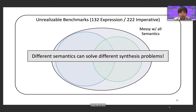The important takeaway is that different semantics can solve different sets of synthesis problems, which confirms our idea that experimenting with different ideas and optimizations expressed as different semantics supplied to a SemGUS problem indeed has merit. You may be intrigued that Messi seems to have far better performance for proving unrealizability versus synthesizing programs. To provide a rough hypothesis of why, I'll walk you through a final example of how Messi proves unrealizability.